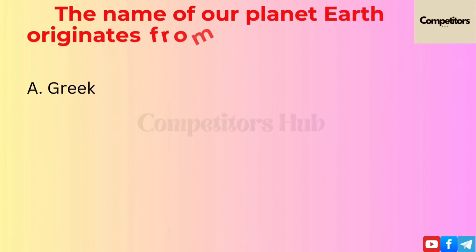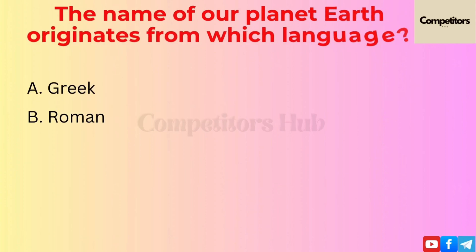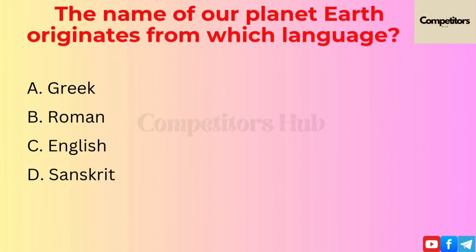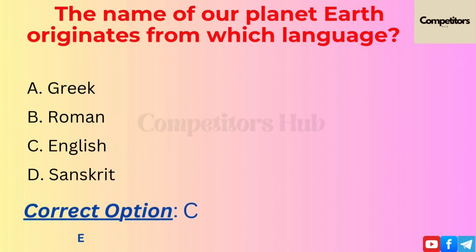The next question is: the name of our planet Earth originates from which language? Option A: Greek. Option B: Roman. Option C: English. Option D: Sanskrit. The correct option is C, English.